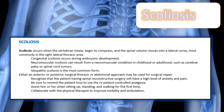Scoliosis occurs when a vertebra rotates and begins to compress, and the spinal column moves into a lateral curve, most commonly in the right lateral thoracic area. There is congenital scoliosis, which occurs during embryonic development; neuromuscular scoliosis, which can result from conditions such as cerebral palsy or spinal cord tumors; and idiopathic scoliosis, which is the most common. Either an anterior-posterior surgical thoracic or abdominal approach may be used for surgical repair. Recognize that patients having spinal reconstructive surgery will have a high level of anxiety and pain — remind them how to use IV PCAs, assist with sitting, standing, and walking for the first time, and collaborate with the physical therapist to improve mobility and ambulation.